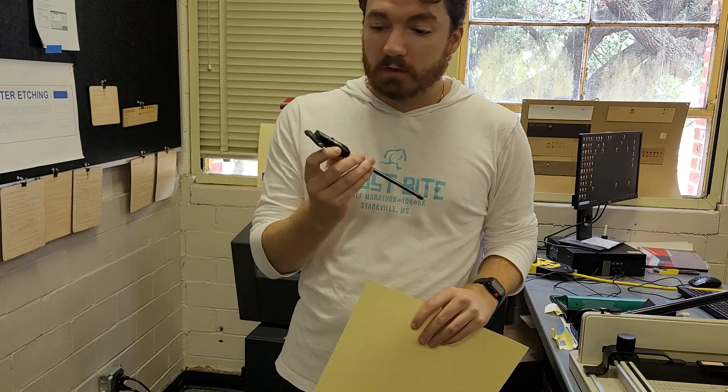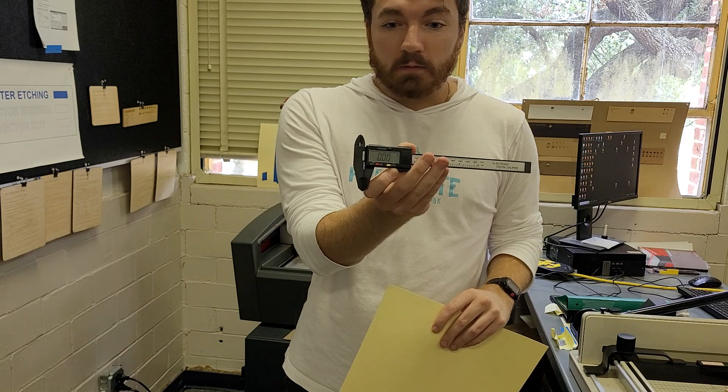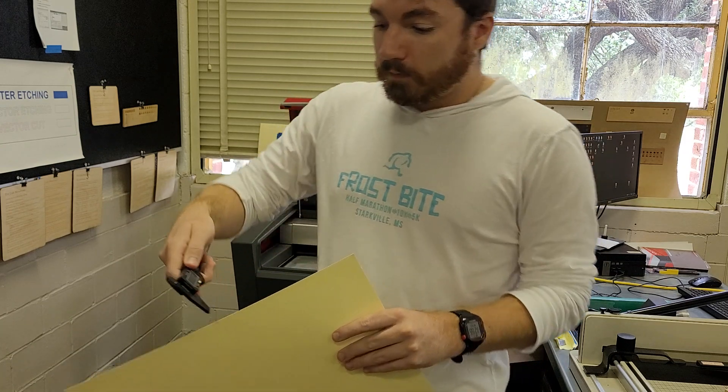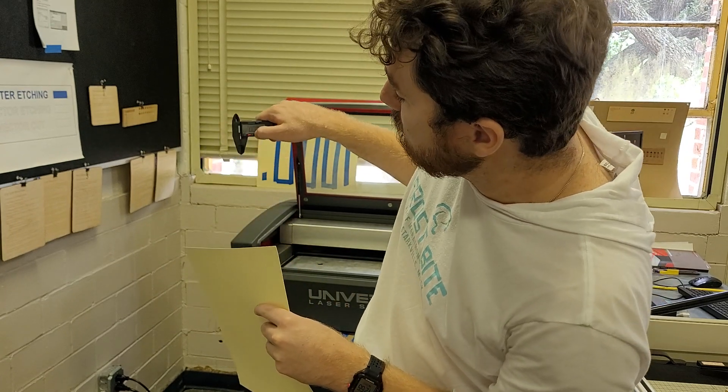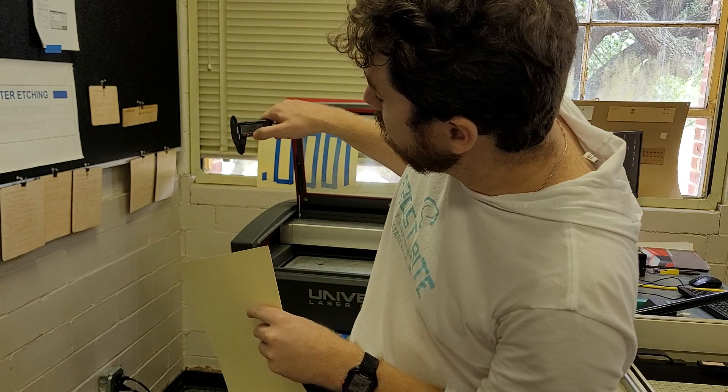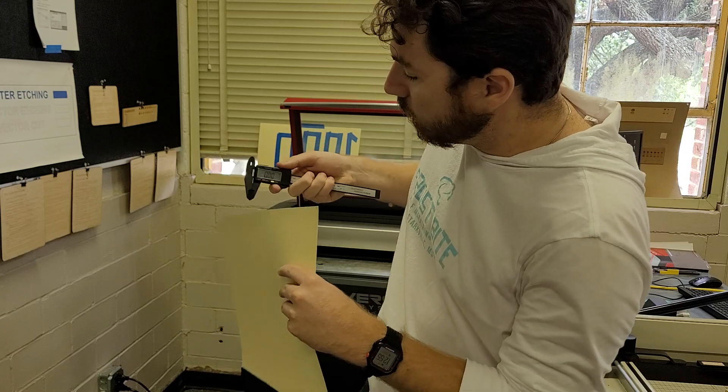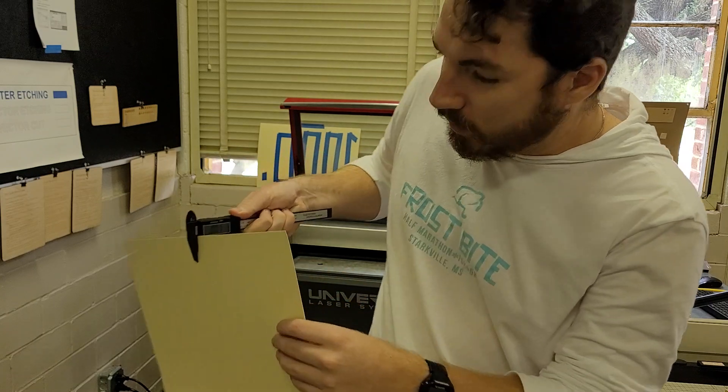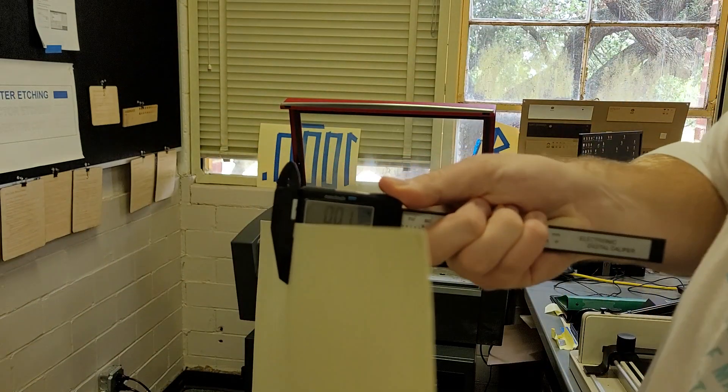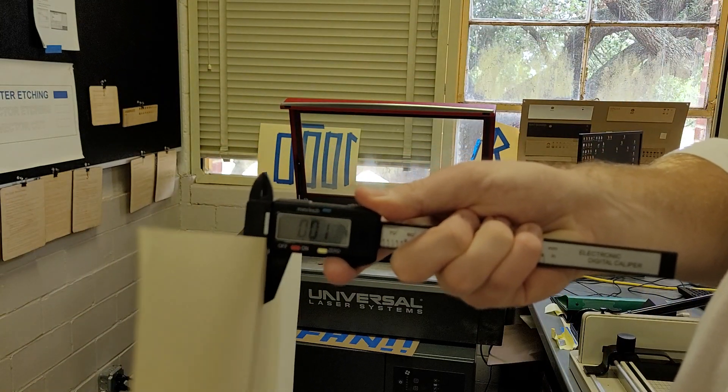What I like to do is take this caliper and make sure it's fully set at zero, pushed up, fully set to zero. Then you're going to open up and clamp on it. When you clamp on it, you'll notice that this material itself is about one, which is fine. That's normal for a piece of paper.